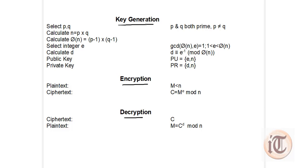In the key generation process, the first step is that we have to select p and q, where p and q are both prime numbers and p is not equal to q. To test whether numbers are prime or not, we use the Miller-Rabin algorithm, which we have already discussed. So the first step is to select two prime numbers p and q such that p is not equal to q.